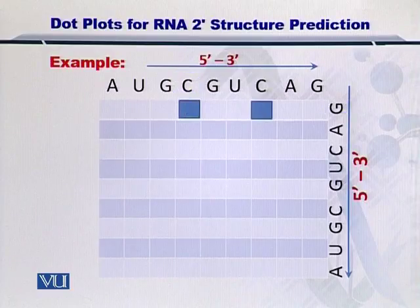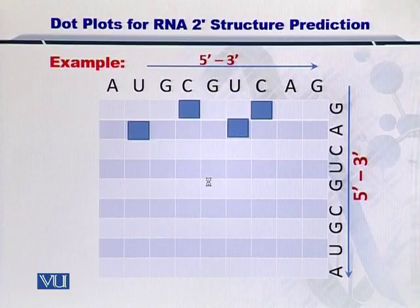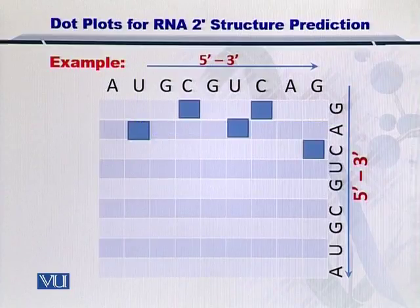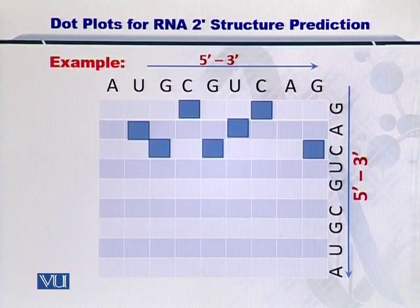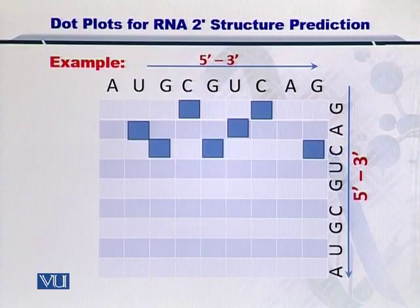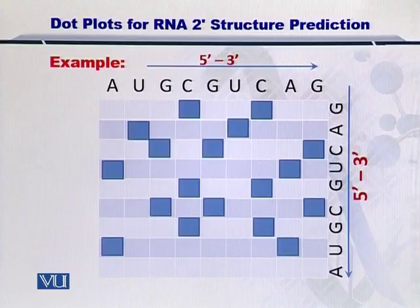You move on and scan the second nucleotide A on the right side. It is complementary to U, as shown here, and therefore you put a dot here as well. You scan again and find out that A is also complementary to this U, giving you another dot. In this way, you keep scanning each nucleotide and try to find its complementary nucleotide in the strand. In this case, C was complementary to this G, this G, and this G as well — so you have three dots in your plot. Upon completing the exercise for all nucleotides, you will be able to fill up the entire square.